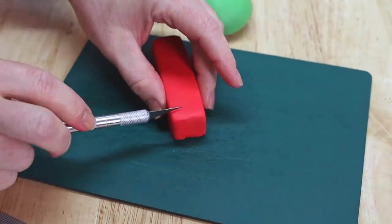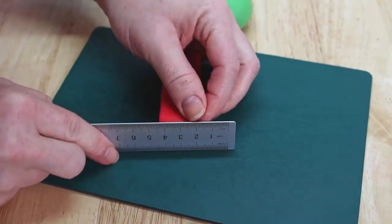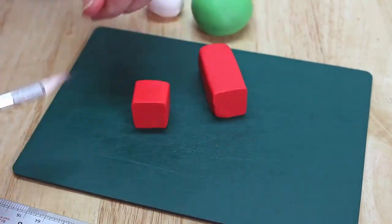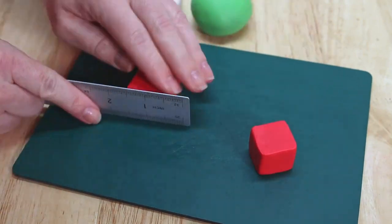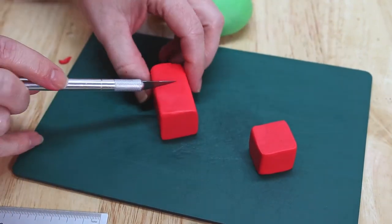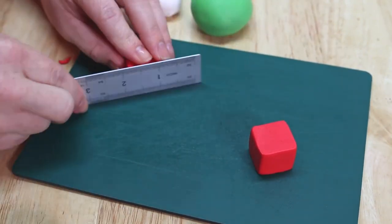So for this part, as you guys can see I'm just using a ruler to shape my fondant into a nice long rectangle. Then I'm using my X-Acto knife to cut that rectangle into three different segments, each one being a different size.